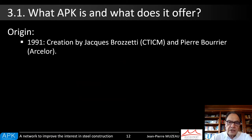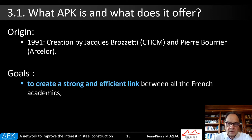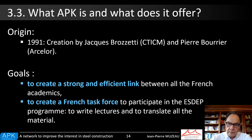The APK was created in 1991 by Jacques Brozetti and Pierre Bourrier. Their main goals were to link academics, whatever the teaching level is, from secondary school up to the PhD level. SDEP being started in 1990, another of their goals was also to create a task force to be able to write lectures and to be prepared to translate into French the huge amount of material described before — for instance, the 6000 pages.